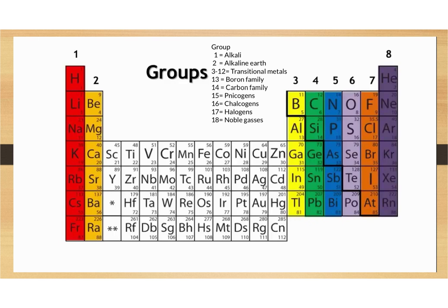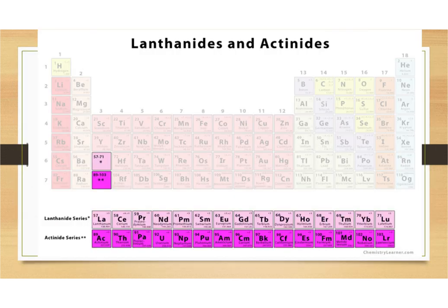Group seventeen are the halogens and group eighteen are the noble gases. Pause the video and get your groups colored in and your key made. Next, color in for our lanthanids and actinids — all the elements in that block across the bottom are our lanthanids. Color that middle section for lanthanids, and do the same for actinids, as all those elements have properties placing them right there on the periodic table.